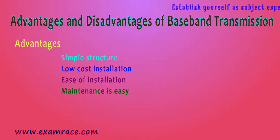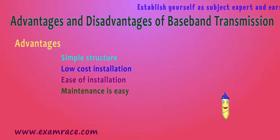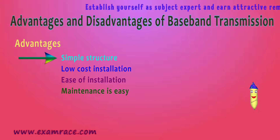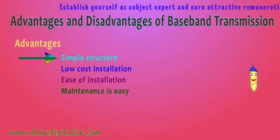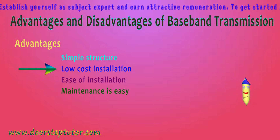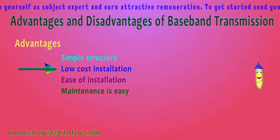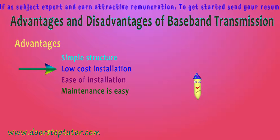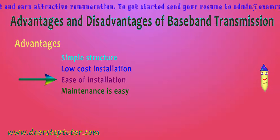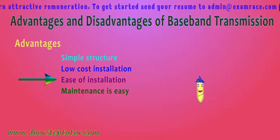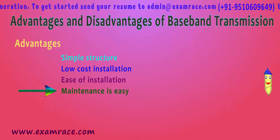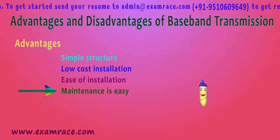Now for the advantages and disadvantages of baseband transmission. The first advantage is simple structure — as it uses a linear process, it will be very simple to operate. The second is low cost installation — a simple structure means the monetary cost of installation will obviously be low. The third is ease of installation — it is very easy to install. The fourth is easy maintenance — due to the linear structure, maintenance is also easy.